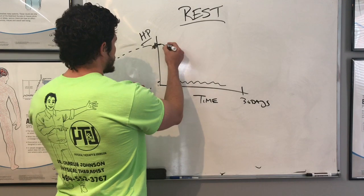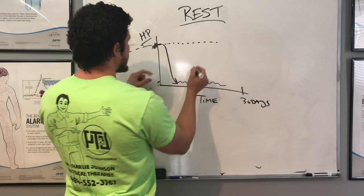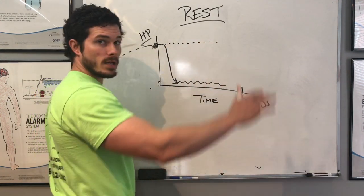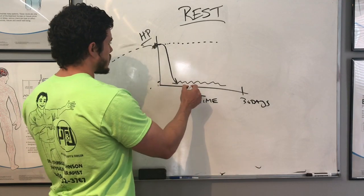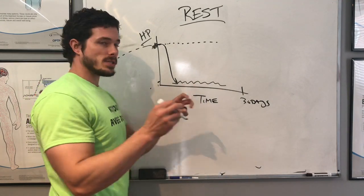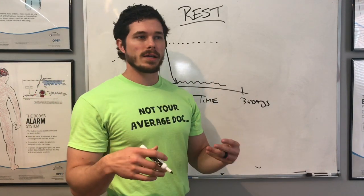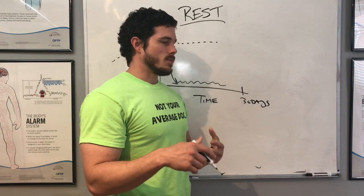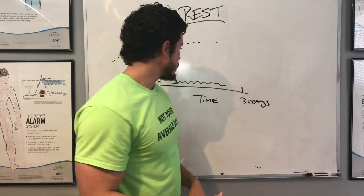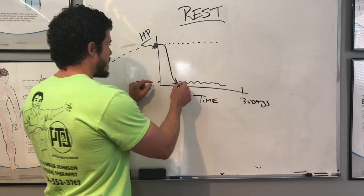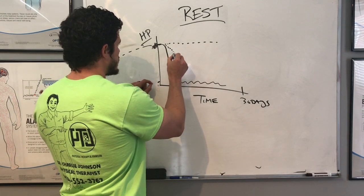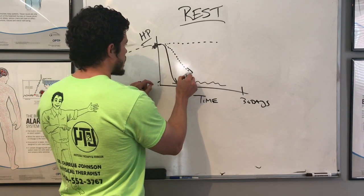But the problem is people think that resting, especially if you have hamstring problems or Achilles tendon problems, especially with tendon problems. These things are designed, and the body in general is designed to lift, move, bend, lift and twist, and really do things. Well, what happens when you rest is as you're resting you're actually getting weaker.